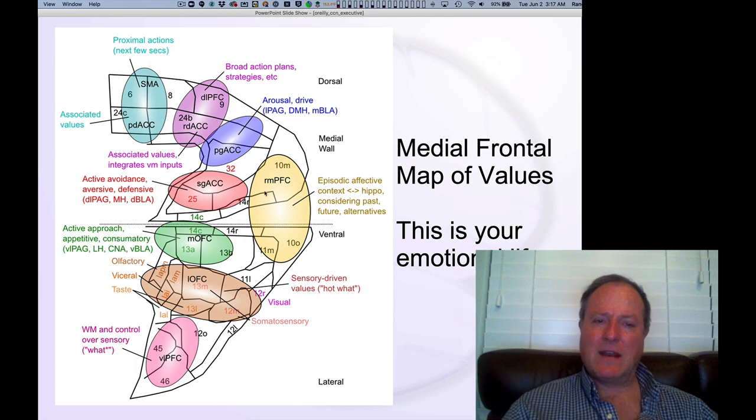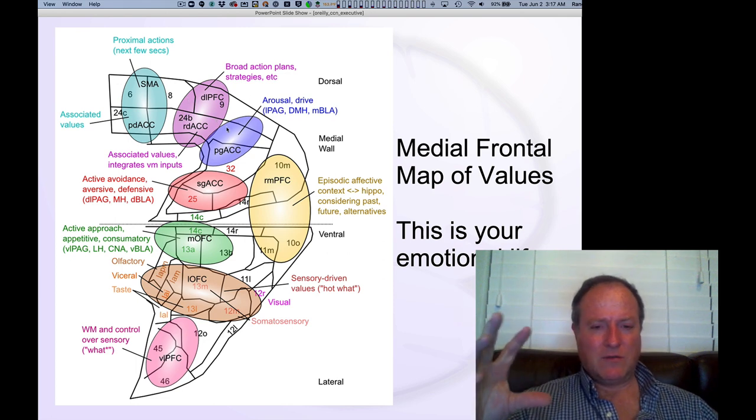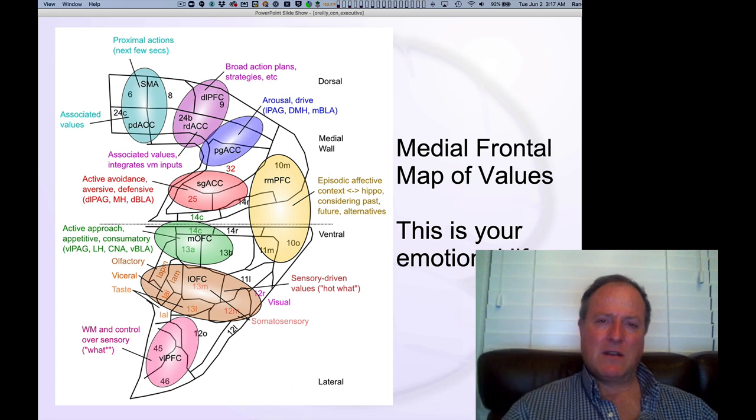You can now subdivide that medial and kind of ventral prefrontal cortical areas into much more fine-grained affective signals in posterior versus anterior cingulate cortex here going along this axis. You have this subgenual ACC shading into OFC that seems to be very important,